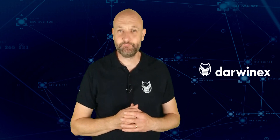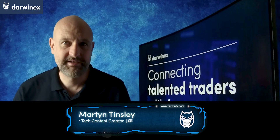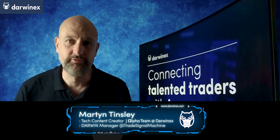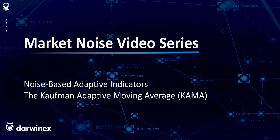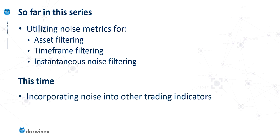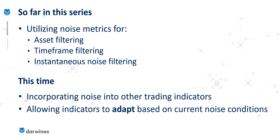Now, back to today's tutorial. The Kaufman Adaptive Moving Average is the obvious choice to look at for this series in terms of adaptive indicators, because it uses the efficiency ratio that we've already looked at, and it does this to perform the adjustment of parameters to best handle noise levels occurring in the market. We've looked at a number of different ways of utilizing noise metrics — asset filtering, time frame filtering, and instantaneous noise filtering. But now we begin to get a little bit more sophisticated.